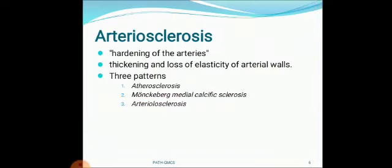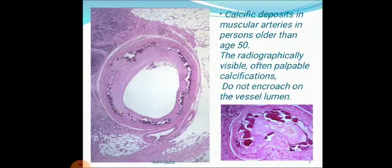What is arteriosclerosis? Arteriosclerosis is hardening of the arteries — thickening and loss of elasticity of the arterial wall. There are three patterns: atherosclerosis, Monckeberg's medial calcific sclerosis, and arteriolosclerosis. This is a picture of Monckeberg's arteriosclerosis — calcific deposits in muscular arteries in persons older than 50. It can be radiographically visible, often palpable, but it does not encroach on the vessel lumen, so it is clinically non-significant.